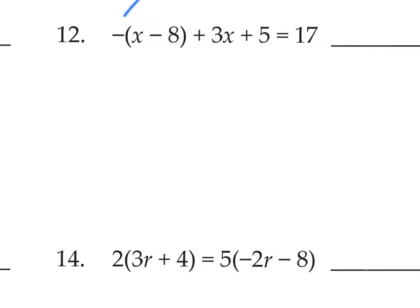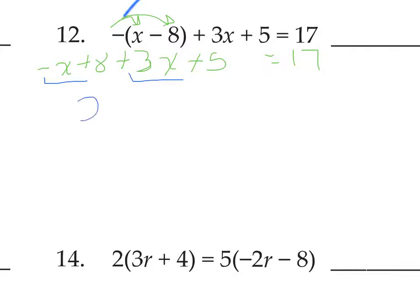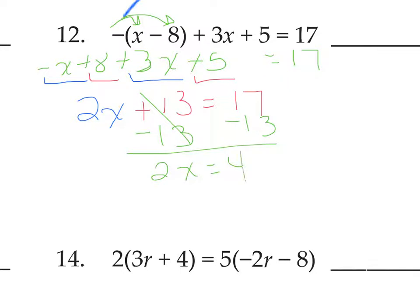More simplifying going on here. We have negative 1 times x, negative 1 times negative 8, plus 3x, plus 5, equals 17. We don't need to do anything on the right — just simplify the left. Negative x and 3x make 2x; 8 and 5 make 13. So 2x plus 13 equals 17. Subtract 13 from both sides: 2x equals 4. Divide by the coefficient: x equals 2.